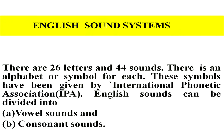Now let's discuss about the English sound system. There are 26 letters and 44 sounds, and there is an alphabet or symbol for each. These symbols have been given by the International Phonetic Association, that is IPA. English sounds can be divided into vowel sounds and consonant sounds.